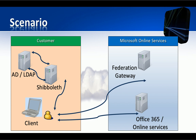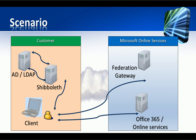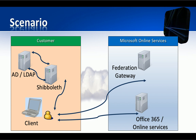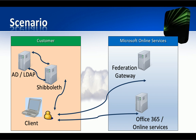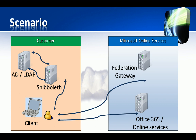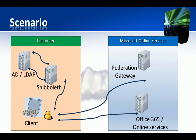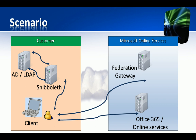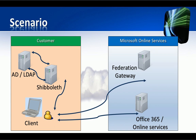In fact, Shibboleth is a service running in your network which is able to receive authentication requests from the outside through a secure channel, delegate authentication to the user's directory and respond to the requester using a standard protocol with a so-called token or assertion